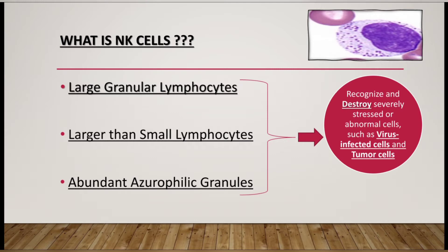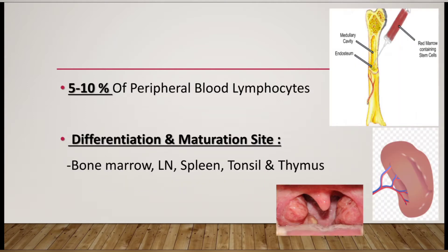This particular cell has a role in the destruction of virus-infected and tumor cells. If there is a viral infection or a cell is becoming cancerous, such abnormal cells — known as stress cells — are recognized and destroyed by natural killer cells. That is the main function of NK cells. In our peripheral blood, 5 to 10 percent of peripheral blood lymphocytes are natural killer cells.